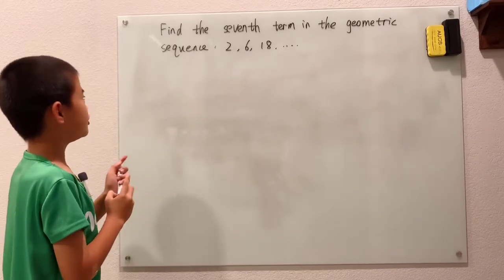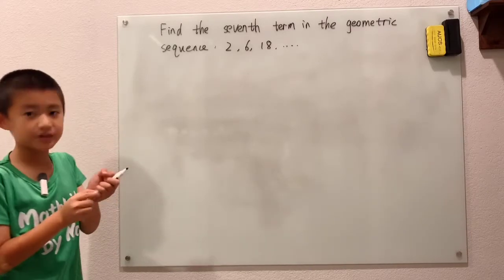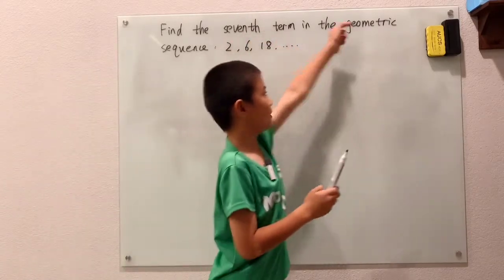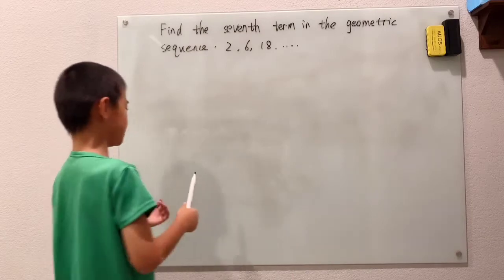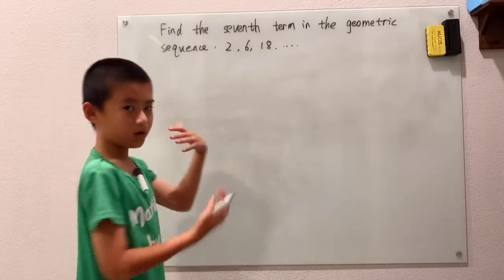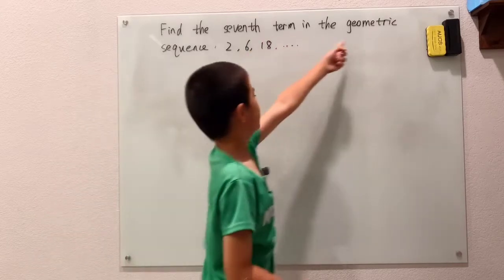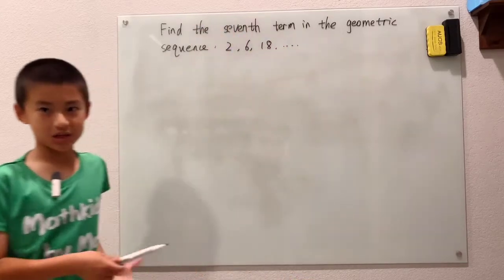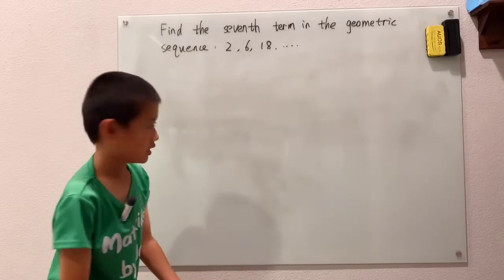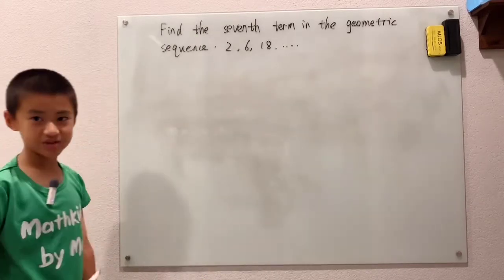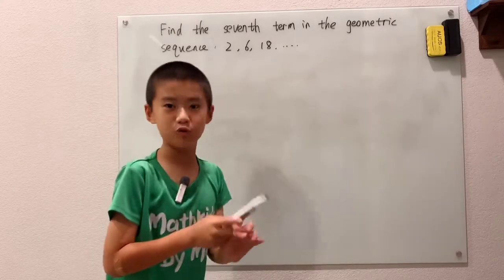Find the seventh term in the geometric sequence: 2, 6, 18. An arithmetic sequence is one where we're adding or subtracting the same number every step. A geometric sequence is a sequence where we're multiplying by the same number every step, or dividing by the same number every step.